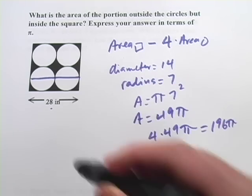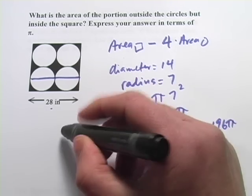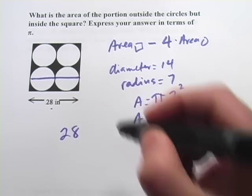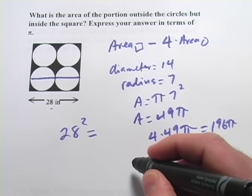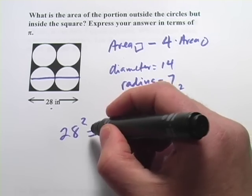Now let's figure out the area of this guy. That's a square. So the area is going to be 28 times 28, or 28 squared. And that's easy enough. That's going to be 784.